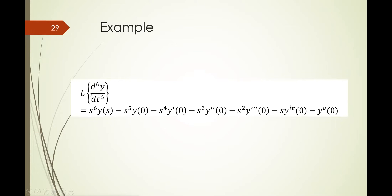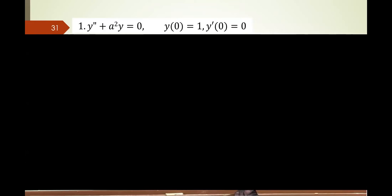For example, consider the sixth order derivative. That's s to the sixth times y(s). The first term is always y(s). Then you subtract one power, and it becomes y sub 0. Subtract one more power, it becomes y prime. Subtract one more, it becomes y double prime, and so on, until you end up without an s but with the n minus 1 order derivative.